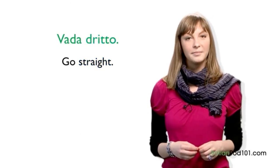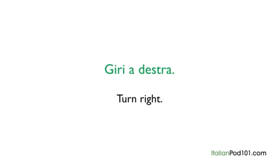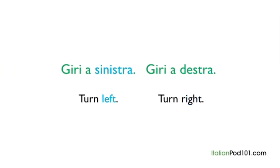Let's take a look at the next expression, which is to turn. Let's cover turn right, which in Italian is giri a destra. The first word giri means turn and it is used always in the formal way of speech. And then you have the preposition a, meaning to, followed by destra, meaning right. Since left is sinistra in Italian, turn left is giri a sinistra.